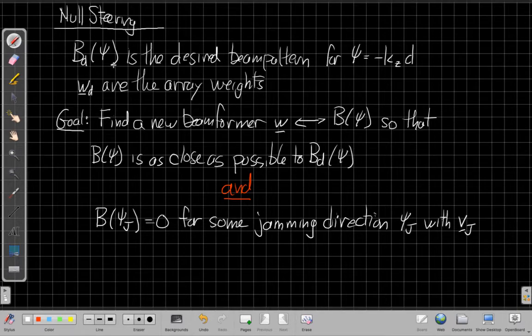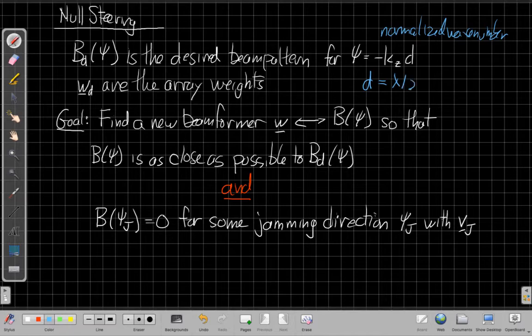The idea of null steering is that I have some B sub D where D is for desired. So B sub D of psi, I'm going to use psi today because psi is the spatial variable where I'm least likely to make a dumb algebra mistake in this derivation. B sub D of psi is the desired beam pattern. For the case where our definition from Van Trees, psi is minus K sub D of K sub Z times D. So this is the normalized wave number. For the derivation today, I'm going to assume that we've got a standard array. So I'll assume D is lambda by 2 for all the work today. So I'm meeting the Nyquist theorem.